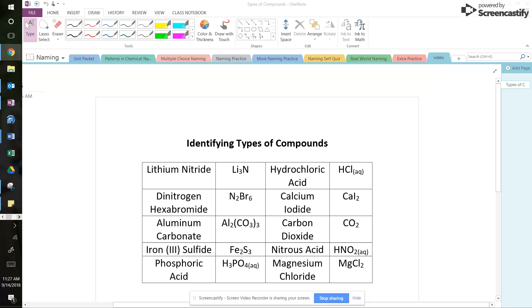So you'll notice right here on the screen, which is in your packet, we've given you both the name and formula of eight or 10 different compounds. What's our first type of compound?